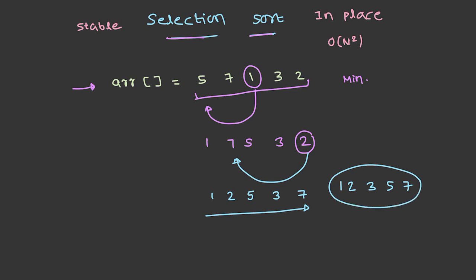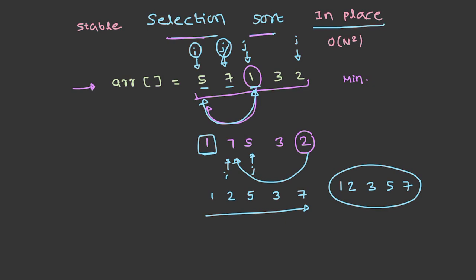The procedure followed is: initially we have a pointer i, and one more pointer j pointing to the next position, scanning the values at both indexes. If the value at j is greater than the value at i, nothing happens; otherwise it moves further. If j's value is less, both positions are swapped. j moves till the end of the array, and in the next iteration, i moves to the next position and j starts from there. The process repeats and completely sorts the array. This falls under in-place sorting — it does not require any extra space — and the complexity is O(n²). It is also a stable sorting algorithm.